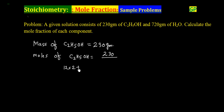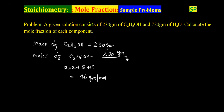...plus 1, which gives 17, and adding everything together comes out to 46 g/mol. So we have 230g divided by 46 g/mol — grams cancel — and this equals 5 moles of ethyl alcohol.